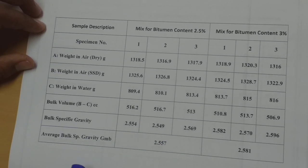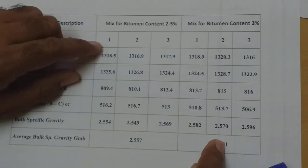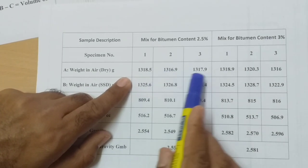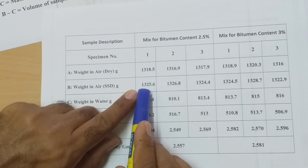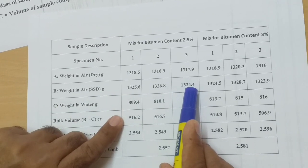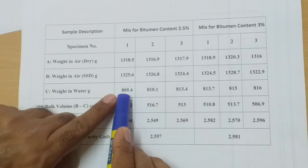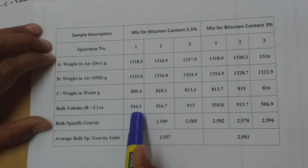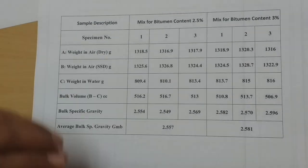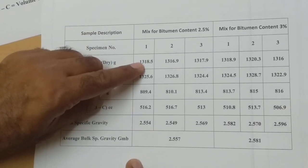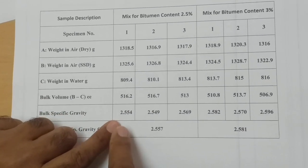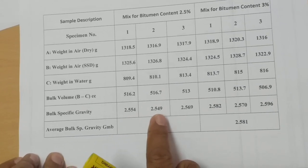Such calculations for each bitumen content are given in my sheet. Starting with 2.5% bitumen content — there are three specimens. The dry weight is taken for sample one, two, and three; the SSD weight for samples one, two, and three; and the weight of the specimen when immersed in water, represented by C. The volume is calculated as B minus C, and the relationship between the dry weight value 1318.5 and this volume value 516.2 gives me a specific gravity of 2.554.